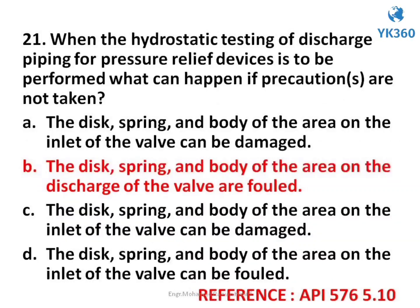Question number 21. When the hydrostatic testing of discharge piping for pressure relief devices is to be performed, what can happen if precautions are not taken? Options are: A. The disc, spring, and body of the area on the inlet of the valve can be damaged, B. The disc, spring, and body of the area on the discharge of the valve are fouled, C. The disc, spring, and body of the area on the inlet of the valve can be damaged, D. The disc, spring, and body of the area on the inlet of the valve can be fouled. Answer is option B. The disc, spring, and body of the area on the discharge of the valve are fouled.